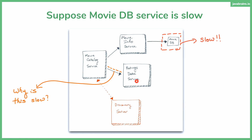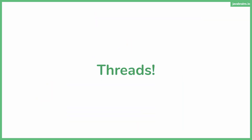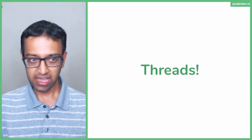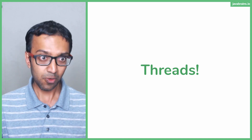The ratings data service does not depend on the movie info service. The movie catalog service depends on both, but these two are independent. If the movie catalog service has an API call that goes through the slow path, it makes sense that API is slow. But another API that just calls the ratings data service has nothing to do with the movie info service — that should work just fine and be super fast. There's no reason for it to be slow. The answer is threads. If you're a Java programmer, you should know how threads work specifically in the context of web servers. I'll give you a quick primer so we're all on the same page.